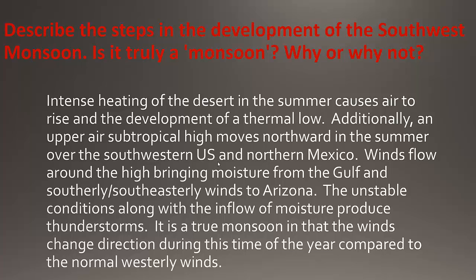Intense heating of the desert in the summer causes air to rise and the development of a thermal low. In addition to that, there's an upper air subtropical high that migrates northward in the summertime and exists over the southwestern U.S. and northern Mexico area. Winds flow around the high in a clockwise rotation, bringing moisture from the Gulf of Mexico and Gulf of California. The wind flow comes from the south or southeast as the winds come into Arizona and the southwestern United States. These unstable conditions along with the inflow of moisture produce thunderstorms. It is a true monsoon in that the winds change direction — that's what a monsoon is. Normally we have westerly winds, but during monsoon season we have southerly, southeasterly winds.